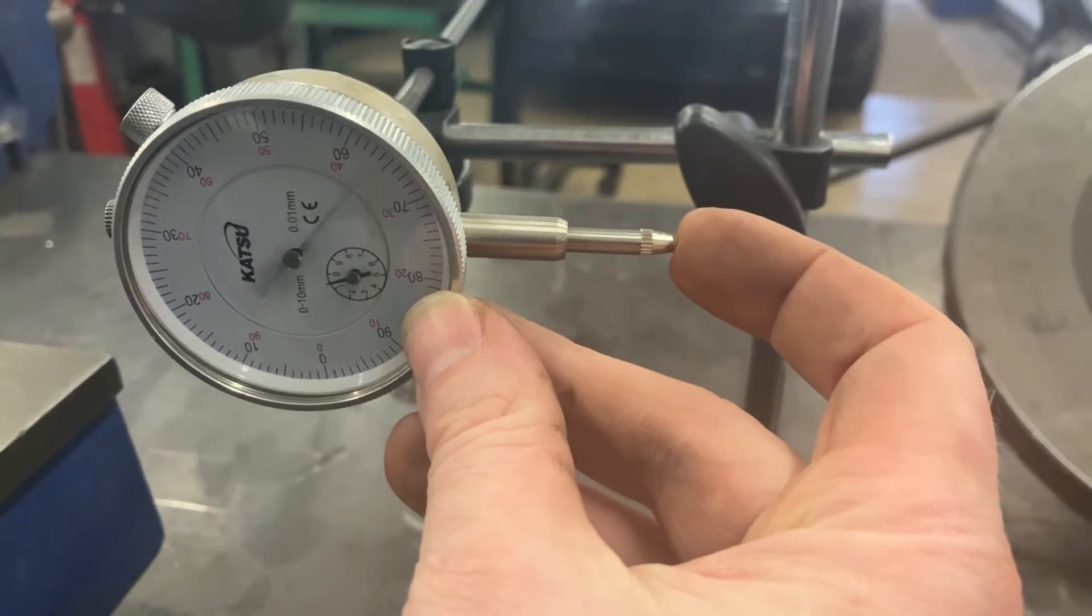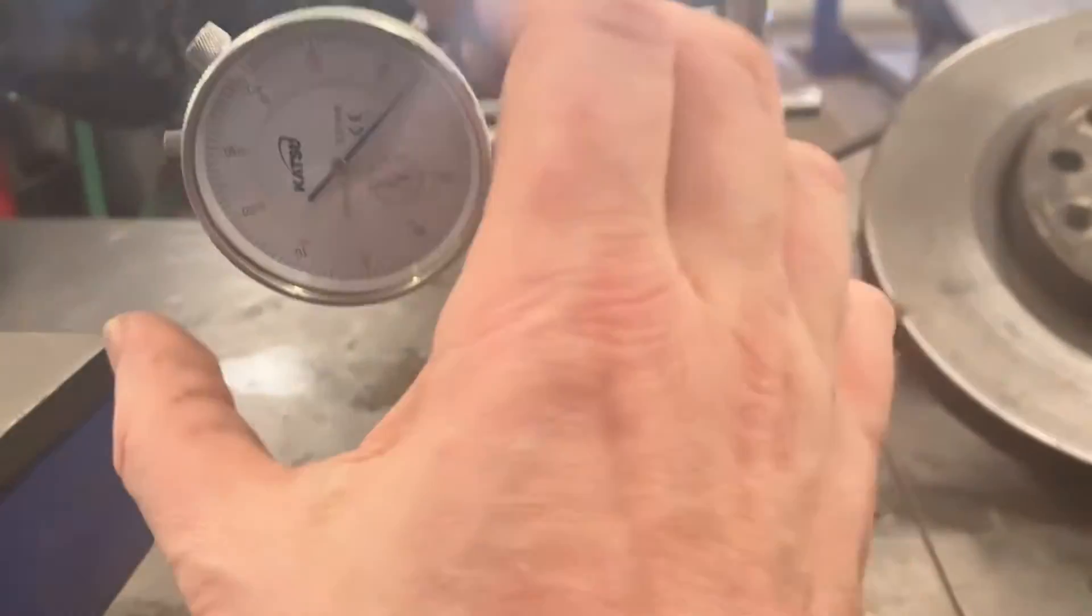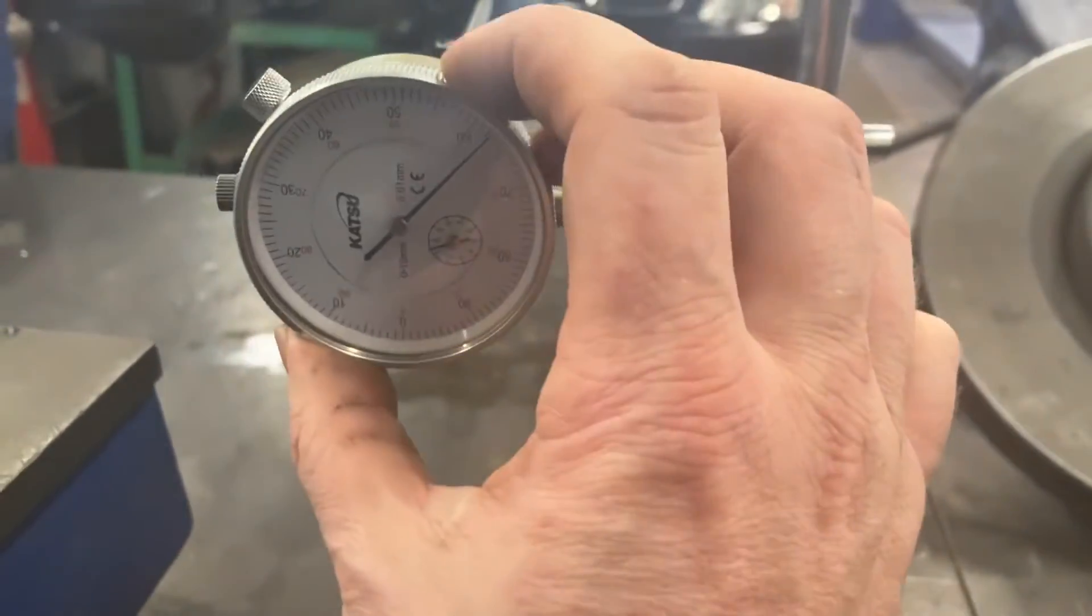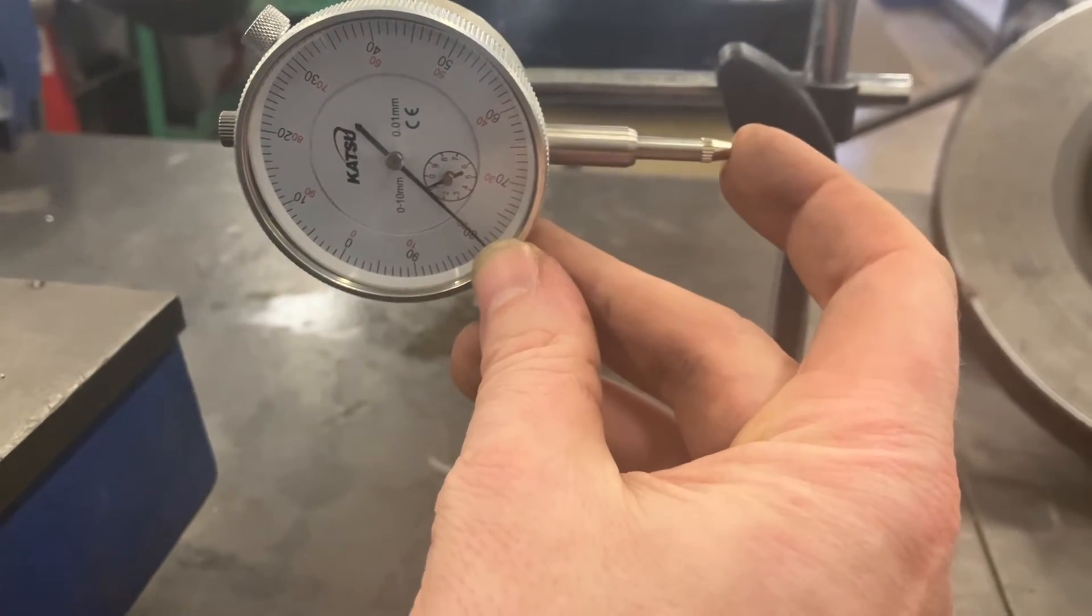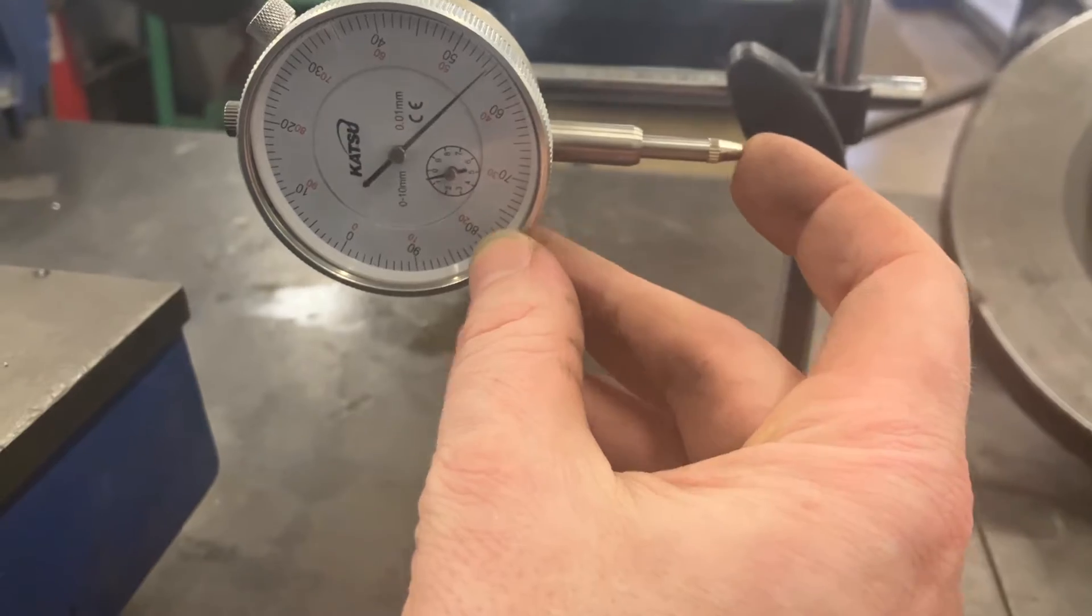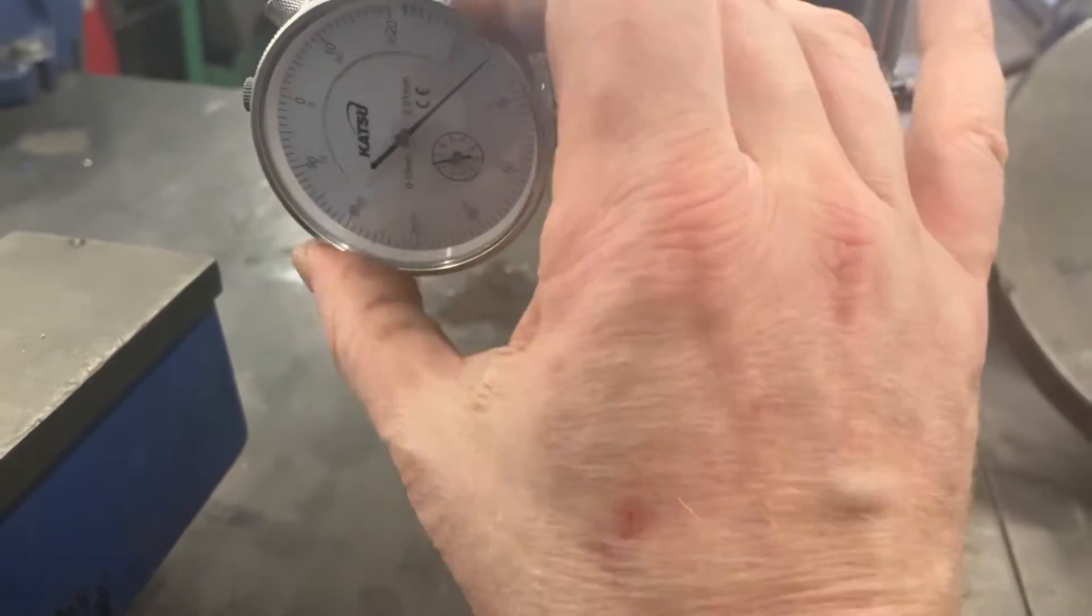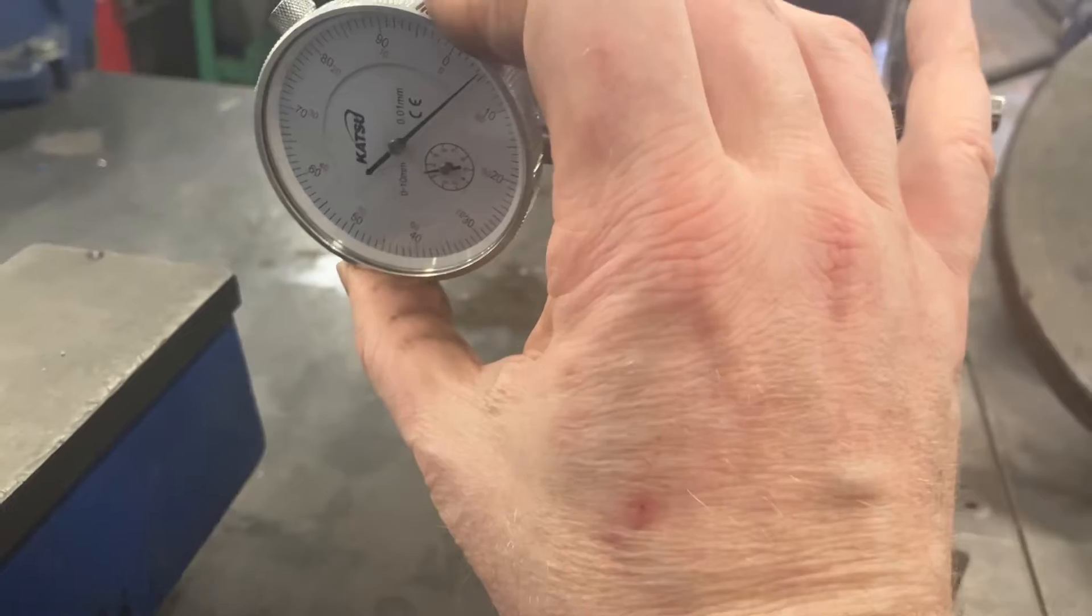We've got the face here - the actual face is adjustable on the gauge. Once you've set it up, because you want to normally set it up under a little bit of tension against the component you're testing, then you set the dial to zero by turning this face here. The face itself, as you can see, shows zero to 100.